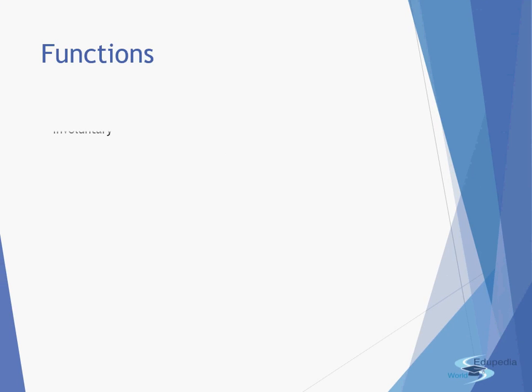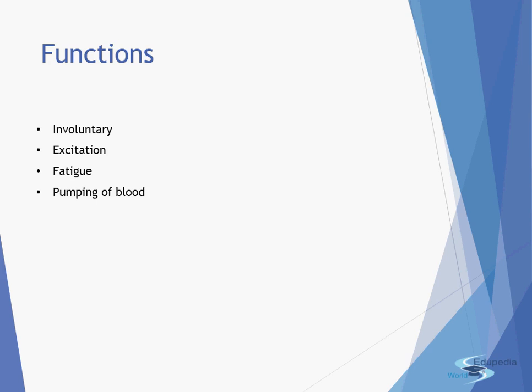The functions of cardiac muscles: they are involuntary muscles that help in the excitation and passing of impulses, they do not get fatigued, and they help in the pumping of blood throughout the body.